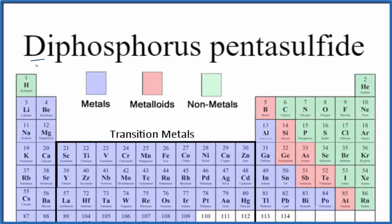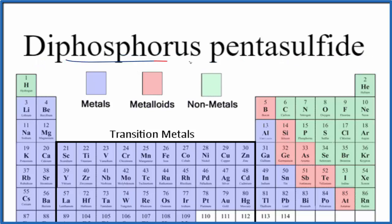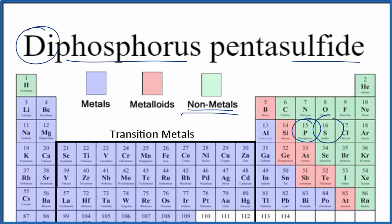Let's write the formula for diphosphorus pentasulfide. The first thing we notice is we have phosphorus, right here on the periodic table — that's a non-metal. And then sulfide, that's from sulfur, also a non-metal. When we have two non-metals, we consider it a molecular or covalent compound, and that's when we take these prefixes into account when we write the formula for diphosphorus pentasulfide.